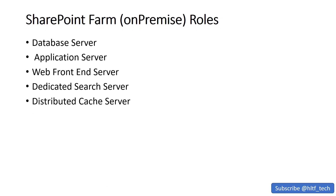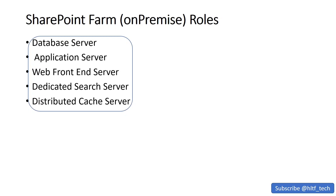Microsoft recommends that in large organizations you have a dedicated distributed cache server, used for caching services. Overall, a minimum of five servers are required to create your primary farm — the one responsible for entertaining primary user requests.